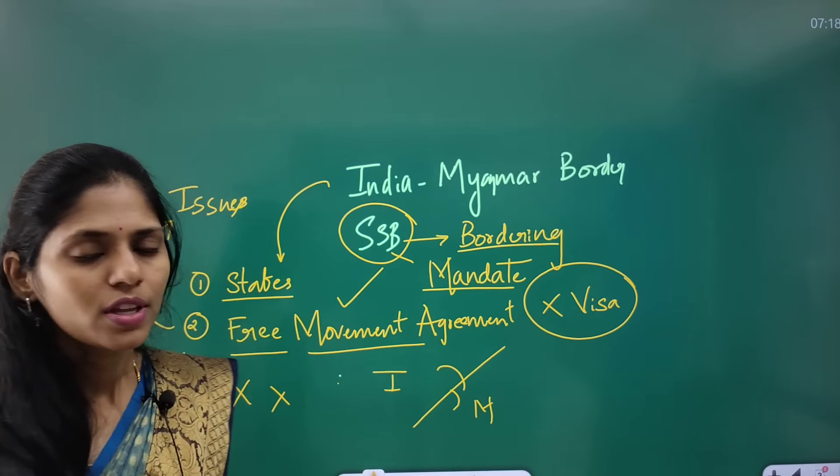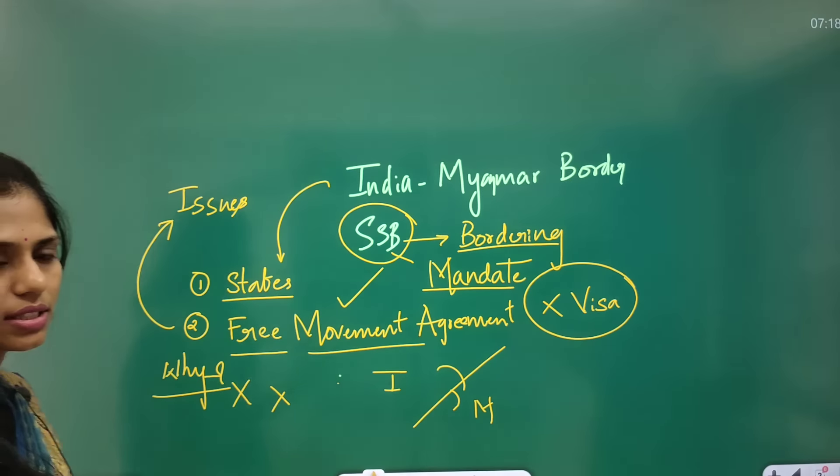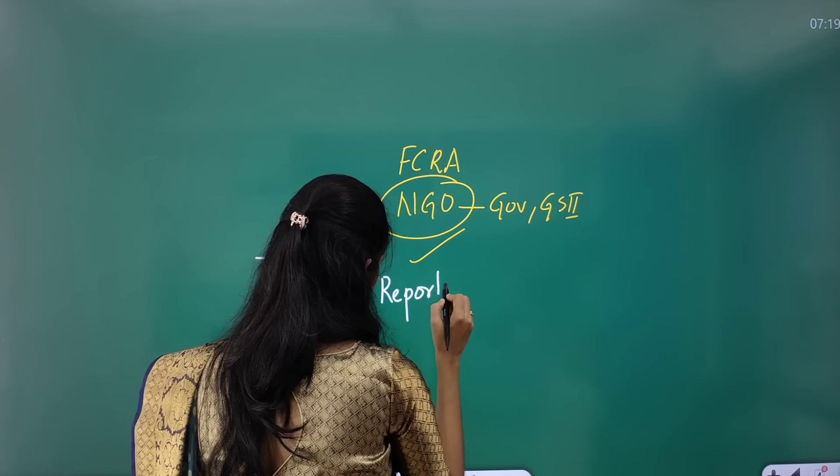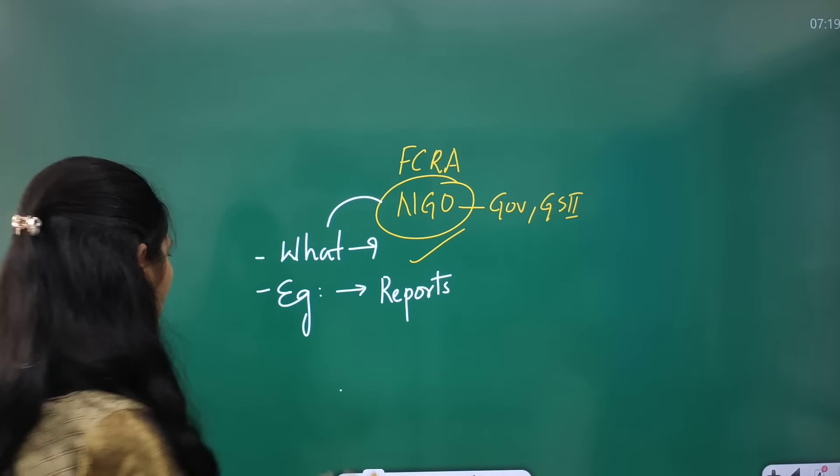The next article is 'World Vision India Loses FCRA Registration.' Here you have to focus on two important things: FCRA and NGOs. NGOs come directly under the syllabus of governance in GS Paper 2. You have to know what an NGO is, some examples operating in India, the reports released by NGOs, and the different categories of NGOs.